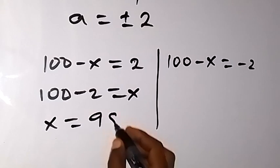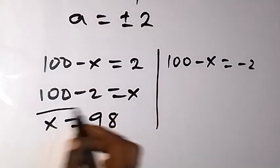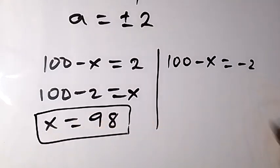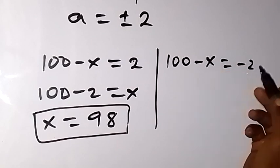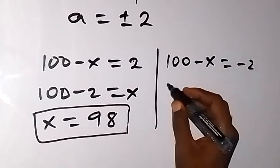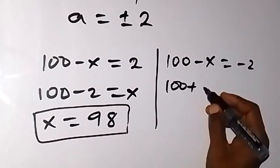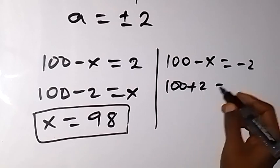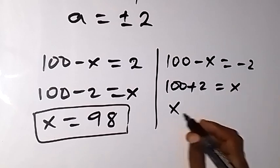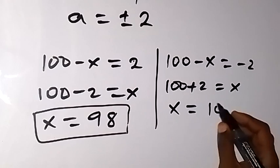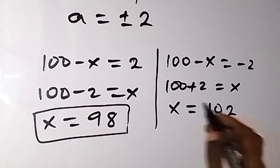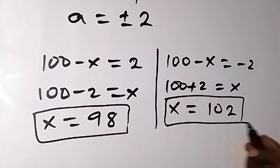From the second case, 100 - x equals +2: taking -x to the right and +2 to the left gives 100 + 2 equals x, same as writing x equals 100 + 2, so x equals 102.